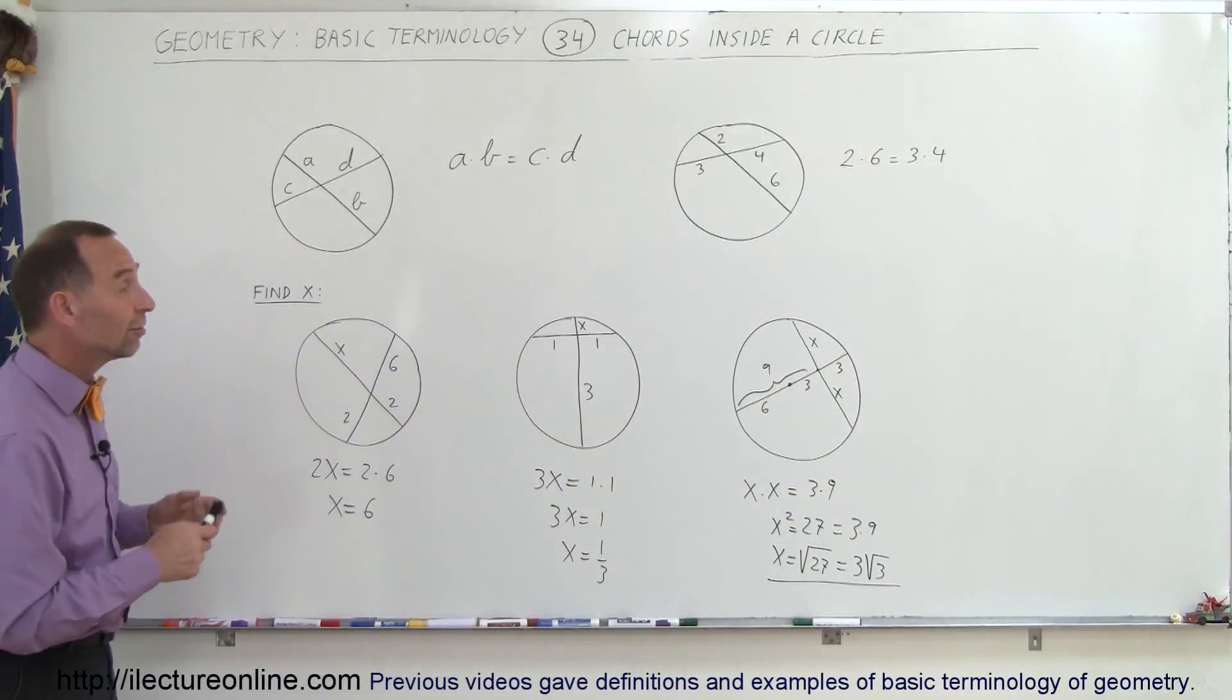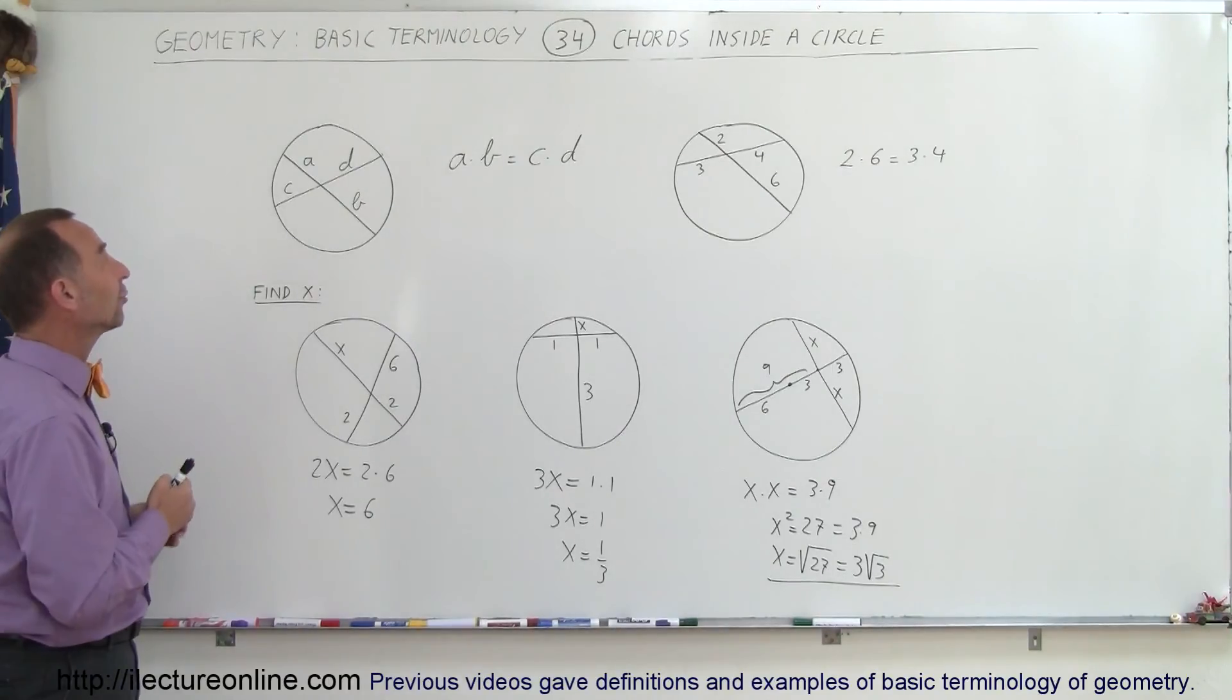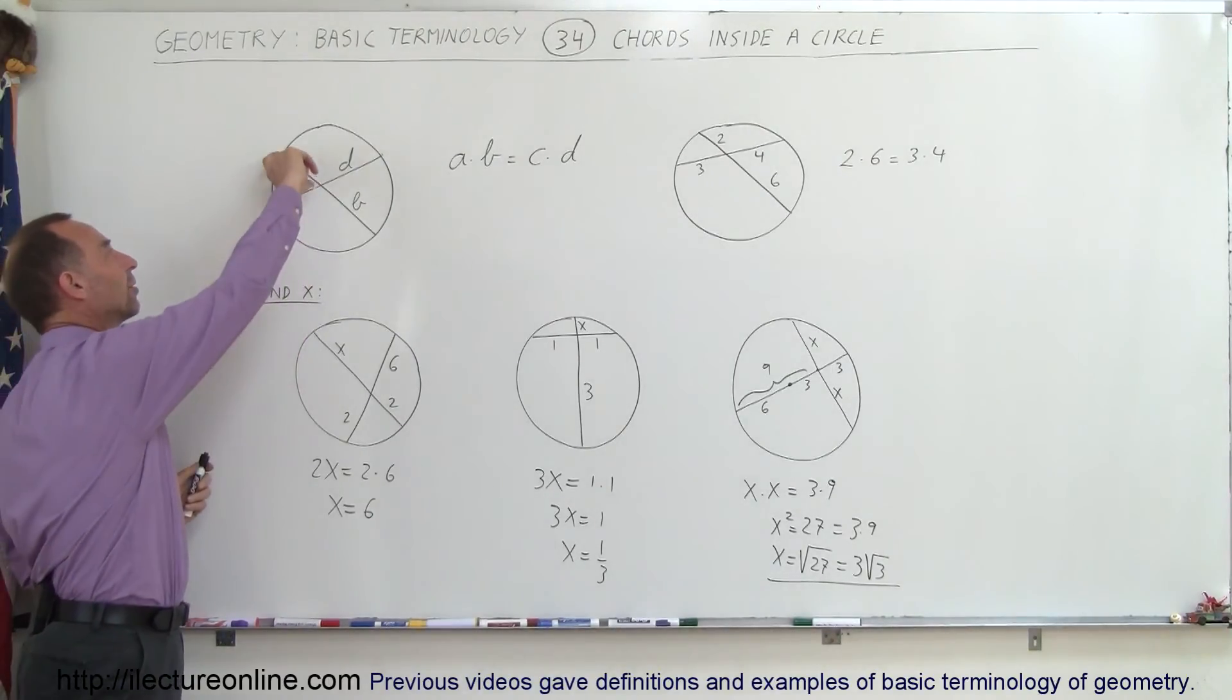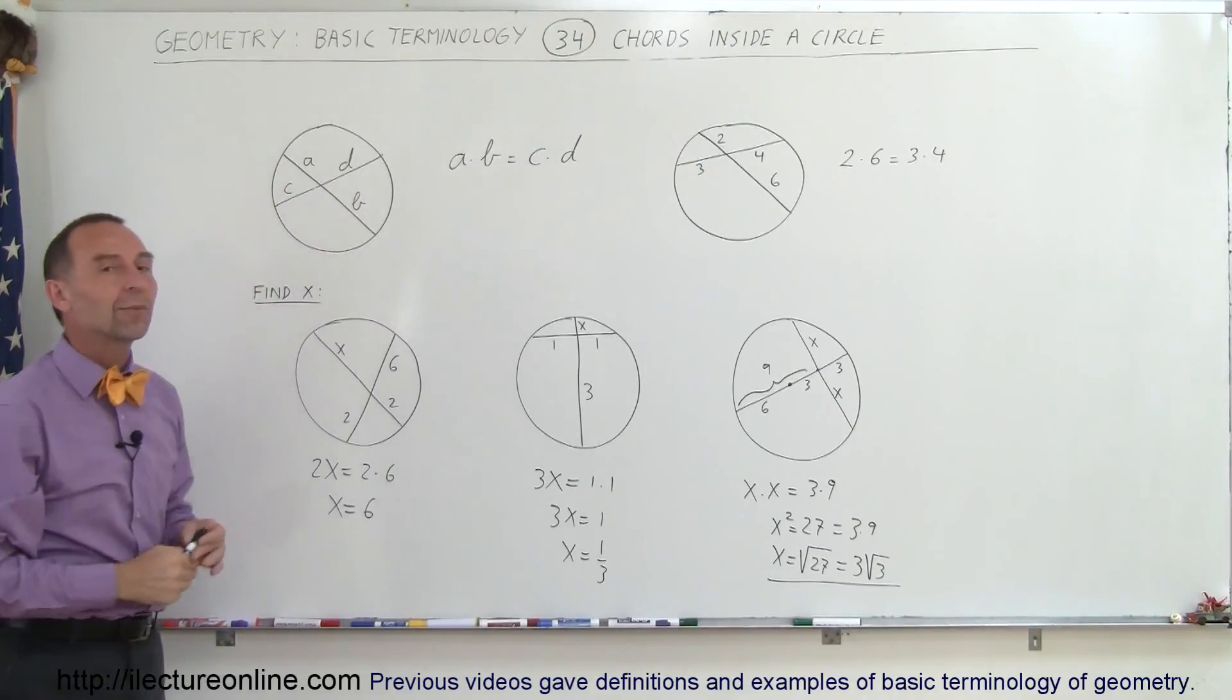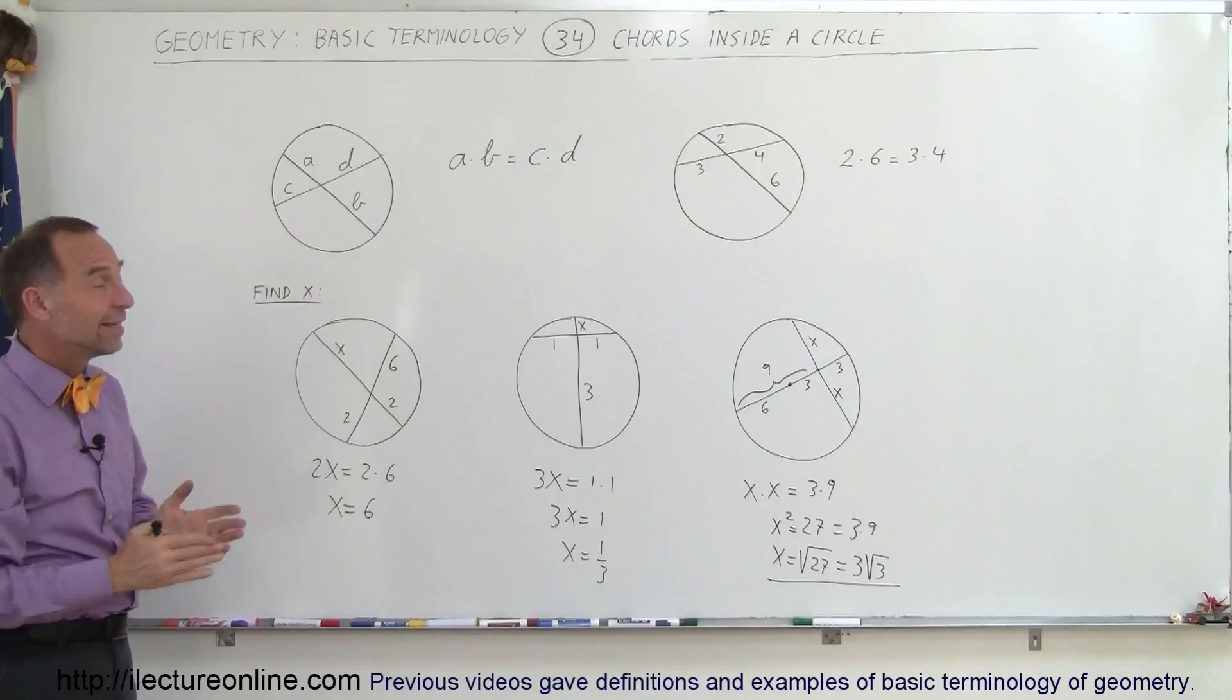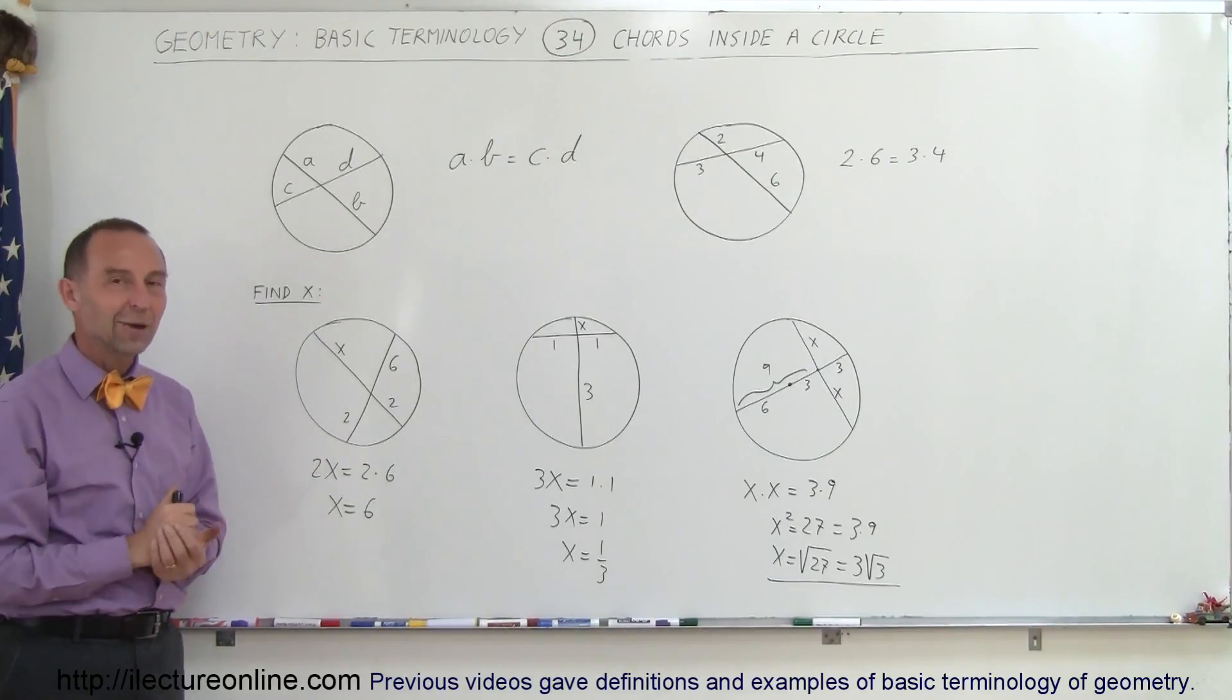So you can see that this is a very handy rule. Whenever two chords cross one another inside a circle, we can say that the product of the length of each of the segments of the chord equals the product of the length of the segments of the other chord. Very handy. Remember this rule. You'll use it lots of times. And that's how it's done.